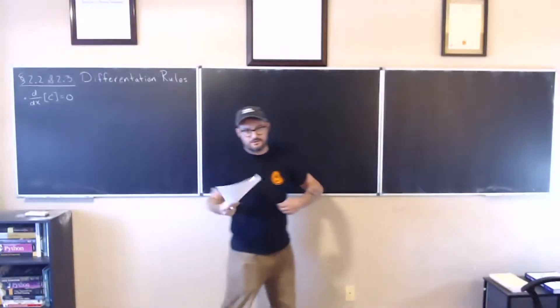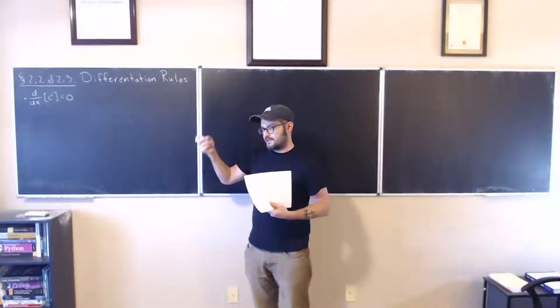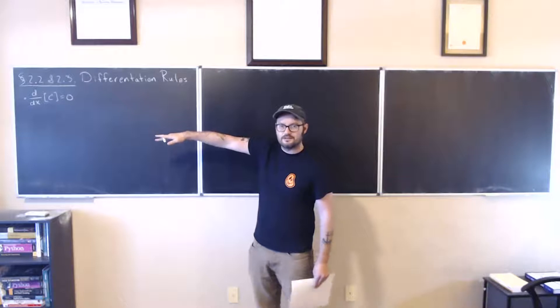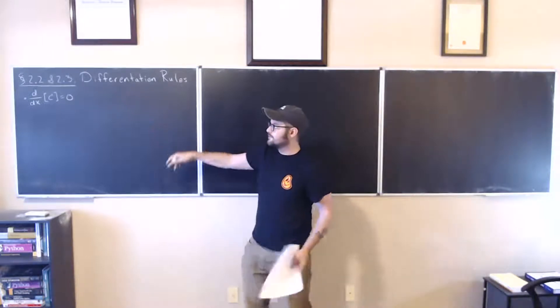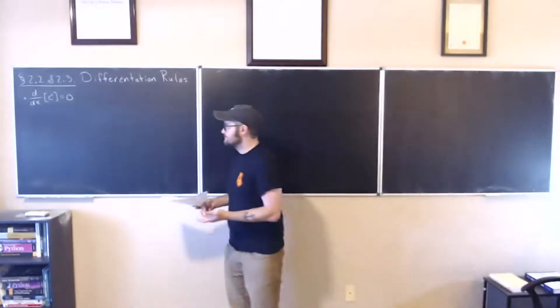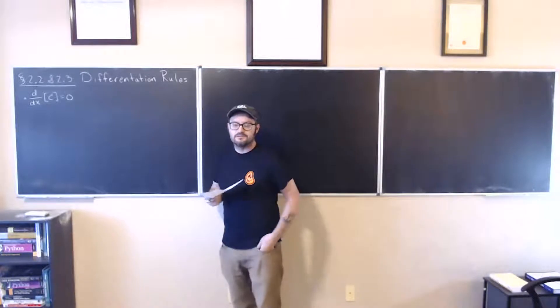The derivative with respect to x of any constant is always zero. If you think back to what the derivative is saying — it's telling us the slope of the tangent line at a point in the graph of the function. A constant is just a horizontal line; the slope is always going to be zero everywhere. That's why the derivative of a constant function is zero, but you can also use the formal definition of the derivative to show that.